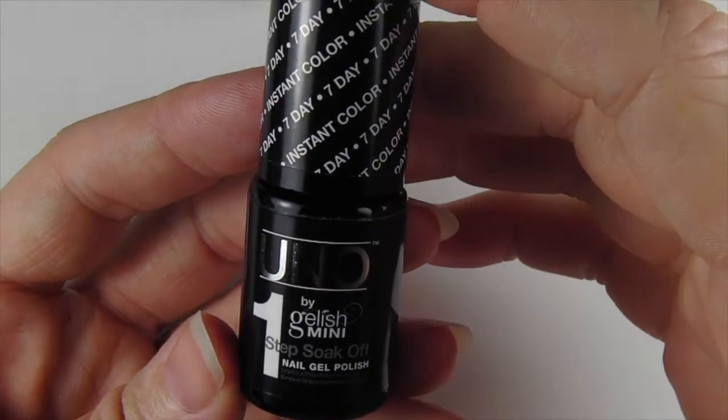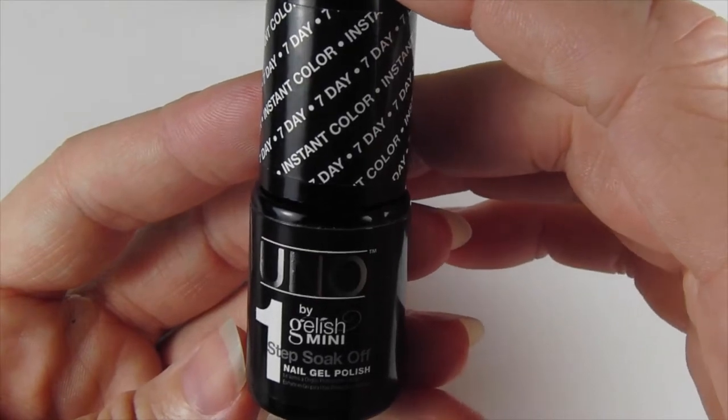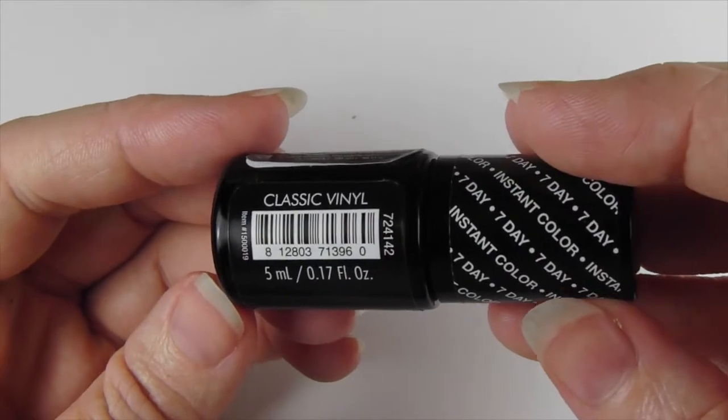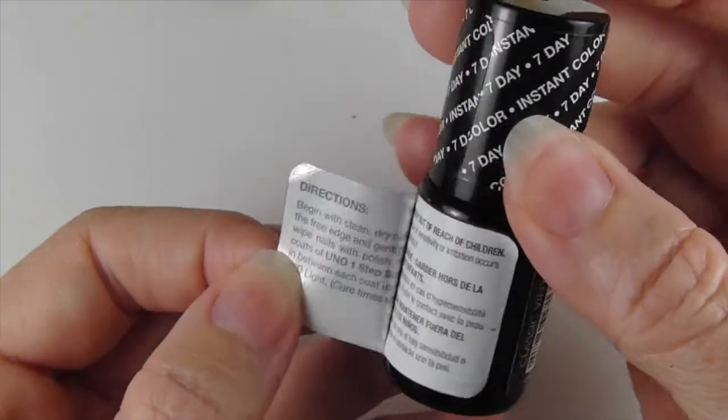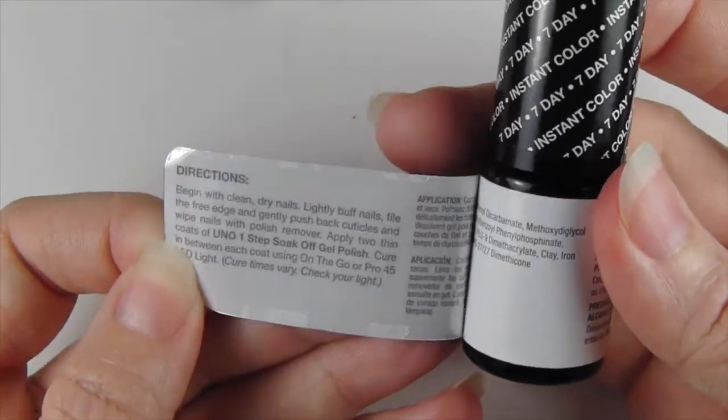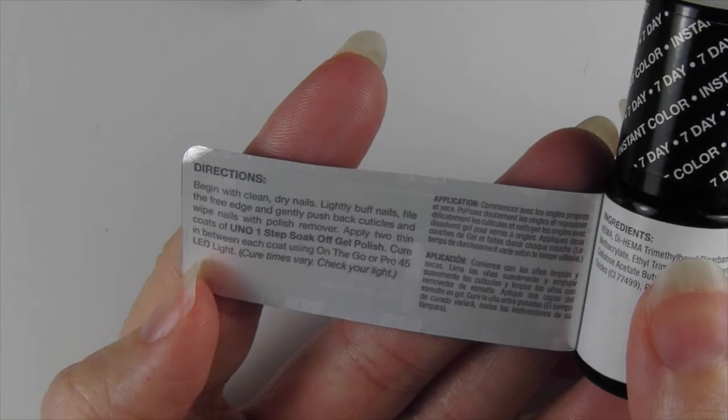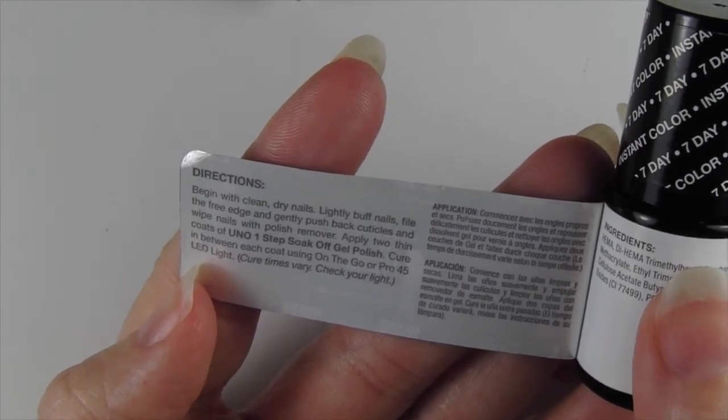The product I'm using to color the dice is Uno by Gelish Mini One Step Soak-Off Nail Gel Polish. This is 5ml in the color classic vinyl. It has some instructions in here. Apply two thin coats, cure in between each coat using on-the-go or Pro 45 LED light. Well, I'm going to use the sun.